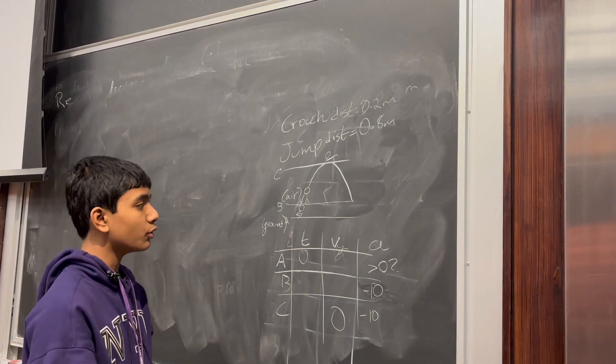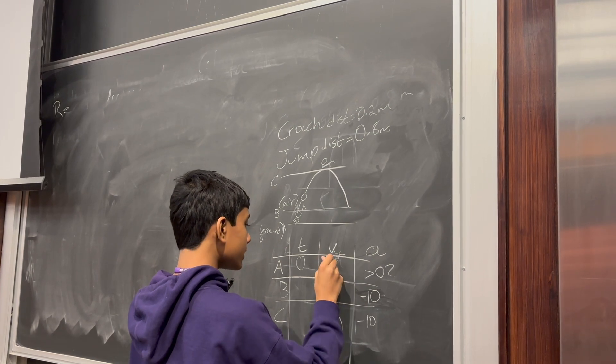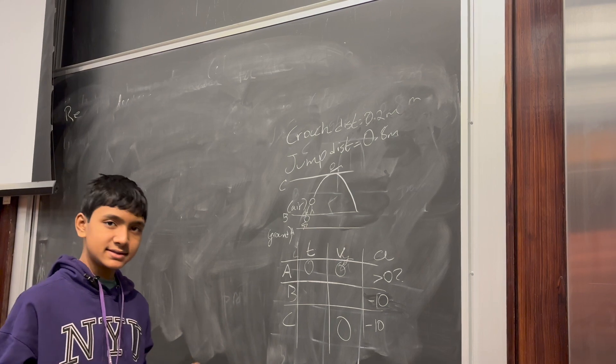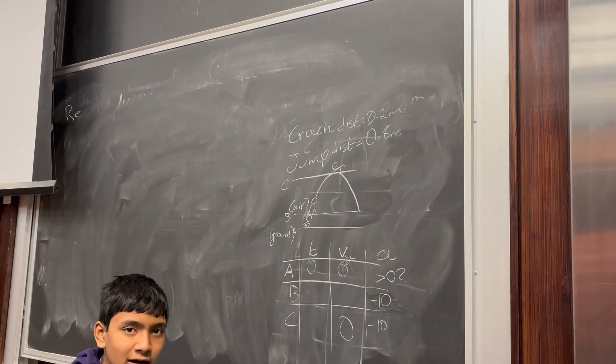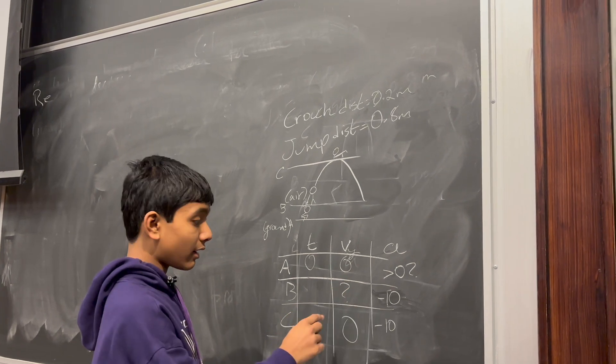Now, we have to actually start focusing. First of all, we already know the initial velocity at A is still zero. Because, you know, he's crouching. He's just gotten off the ground. But, we have to figure out this.